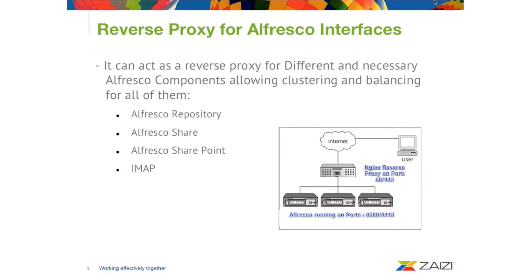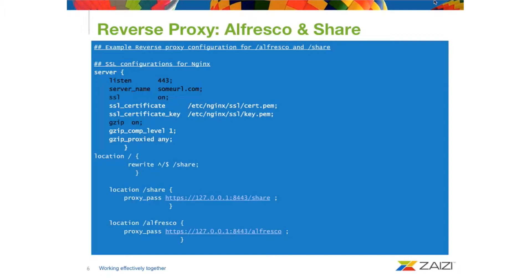As I said before, one of the reasons we use Nginx as our web server is because it can be used as a reverse proxy for all the Alfresco interfaces. The added value that Nginx can offer is that we can configure it to load balance interfaces like the Alfresco SharePoint integration and the IMAP integration. That's something we've done in the project I'm working on right now and it's actually quite useful to be able to balance the requests of those two interfaces apart from the normal ones — the Alfresco repository and Alfresco Share.